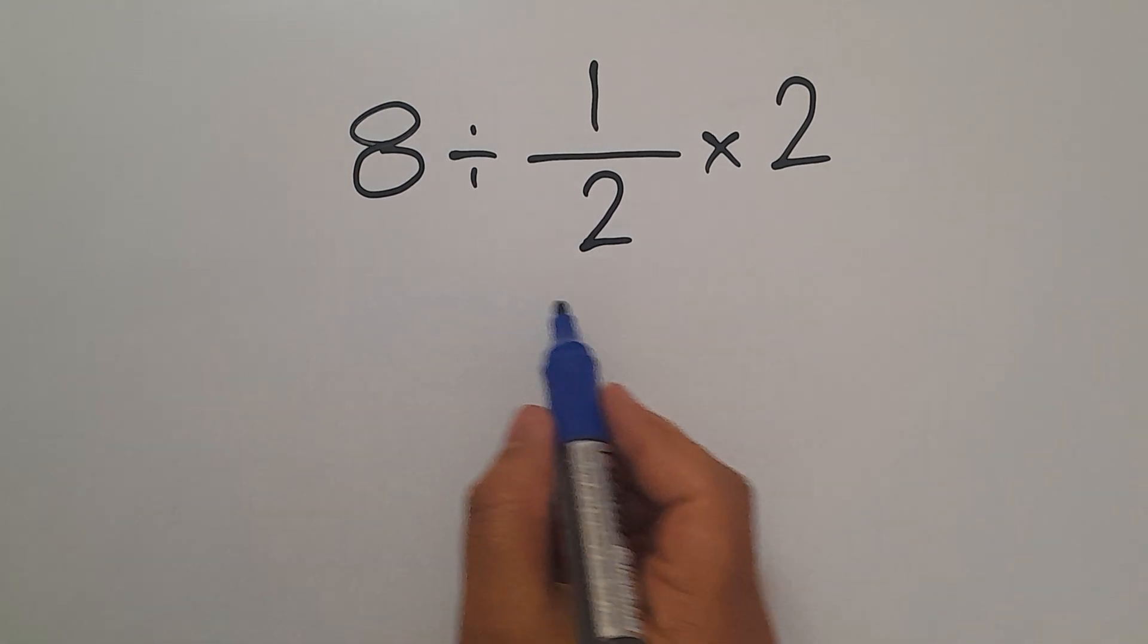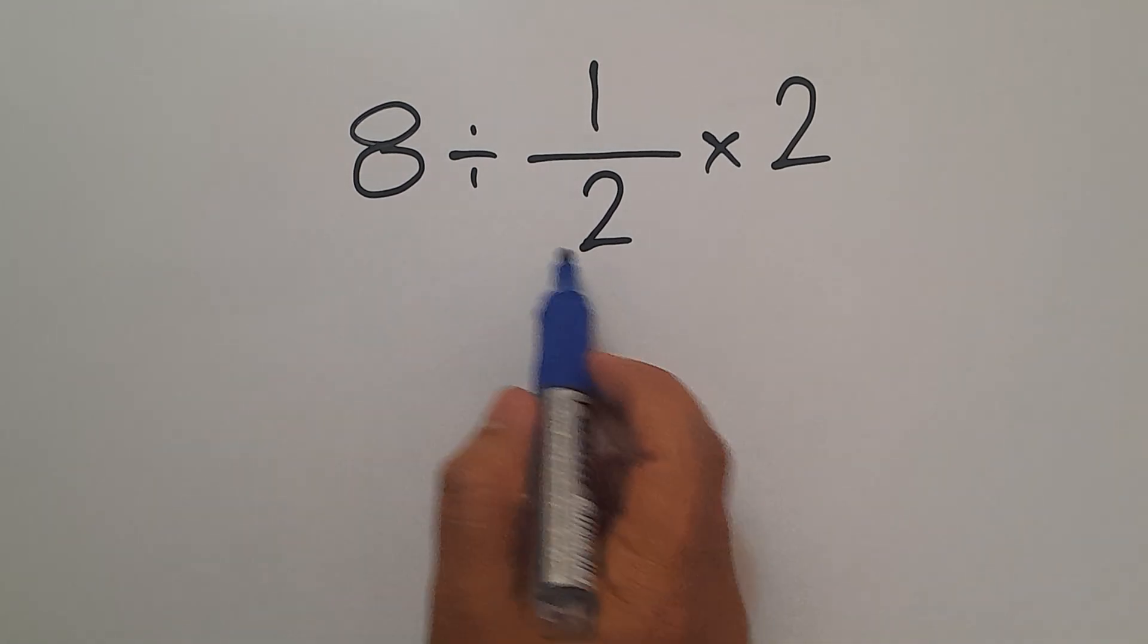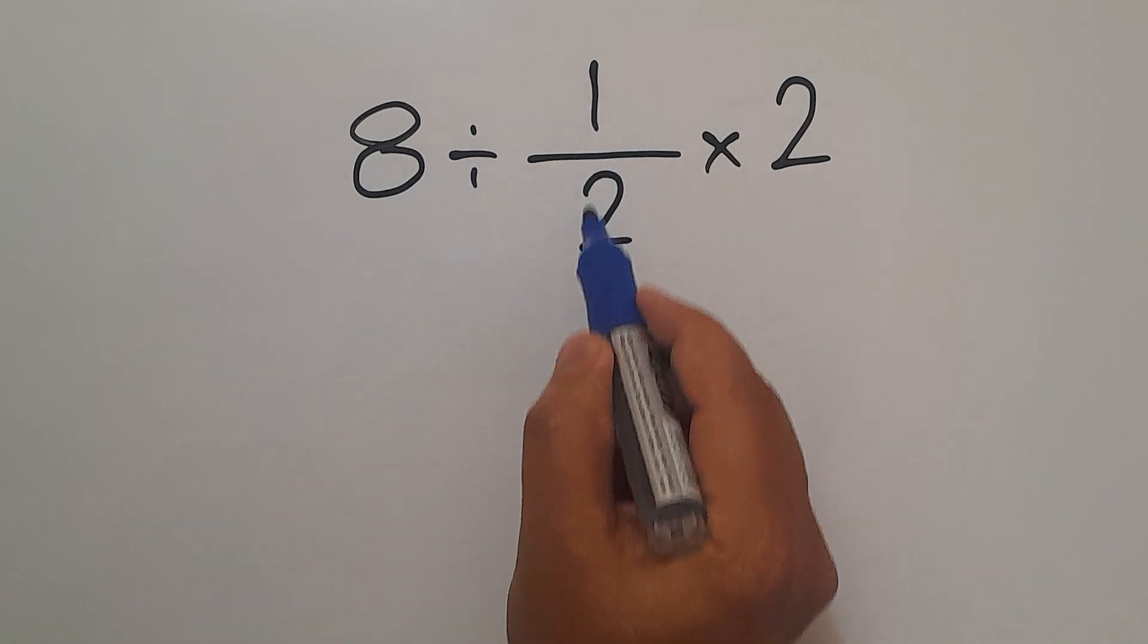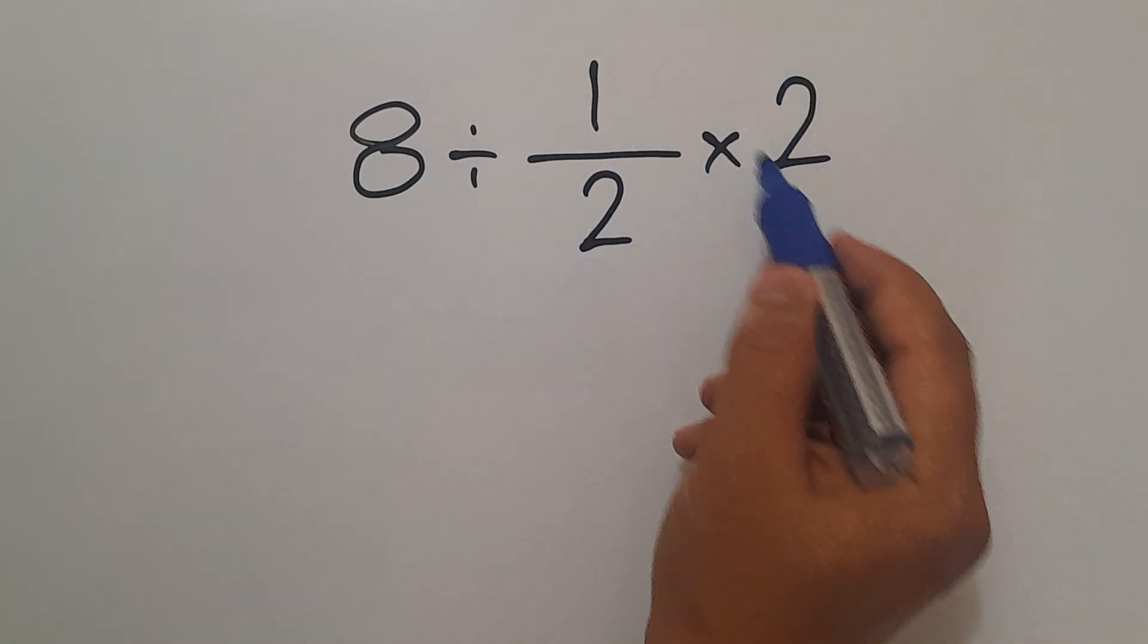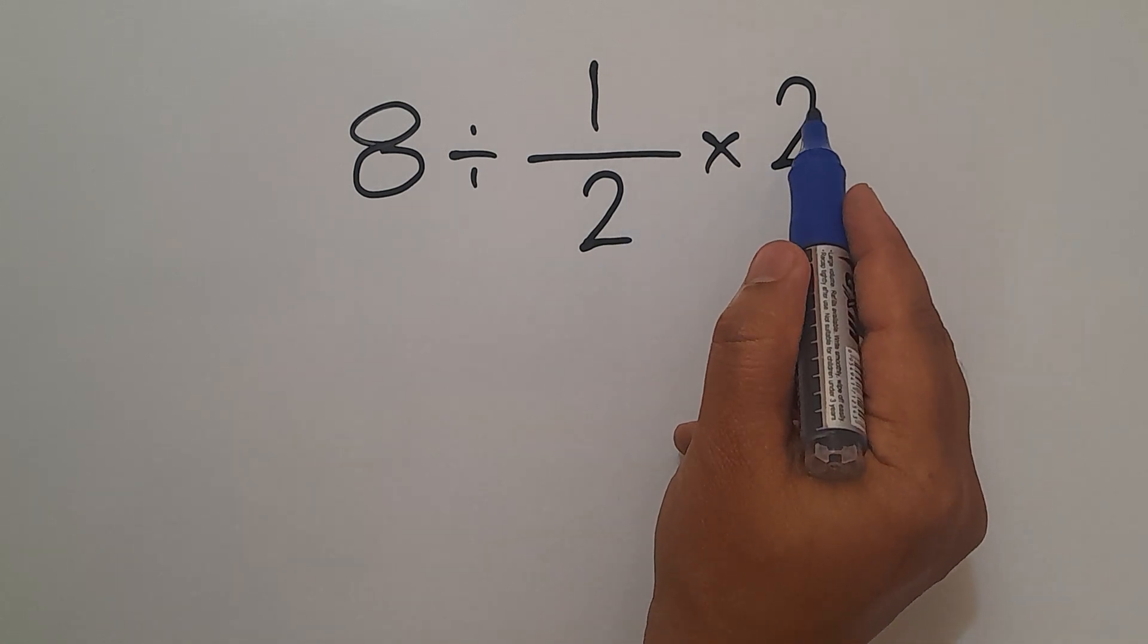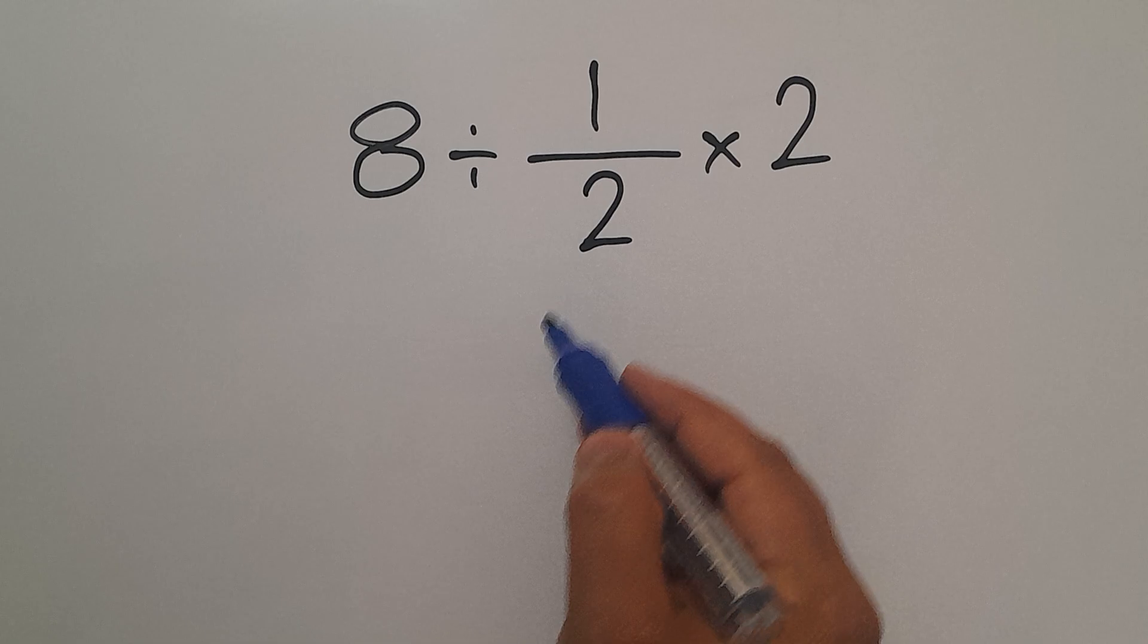Hey guys and welcome to this video. In this video we want to find the value of this expression: 8 divided by 1 over 2 then times 2. Let's start. This 2 and these two can cancel each other out.